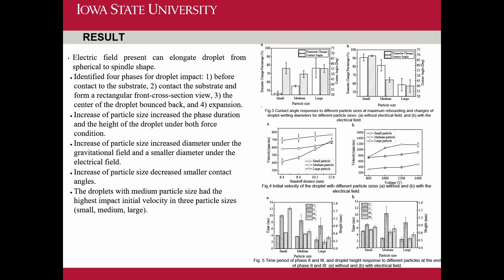By analyzing those results, we find the diameter change percentage of the droplet behaves differently with and without the electric field present, as well as the impact velocity. As you can see in the graph, with the electric field present, the velocity increases significantly. The time periods of phase 2 and phase 3 also have different time frames with and without the electric field.